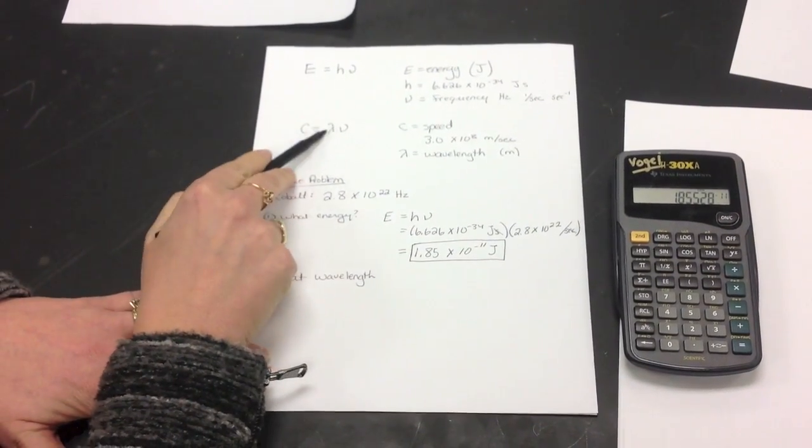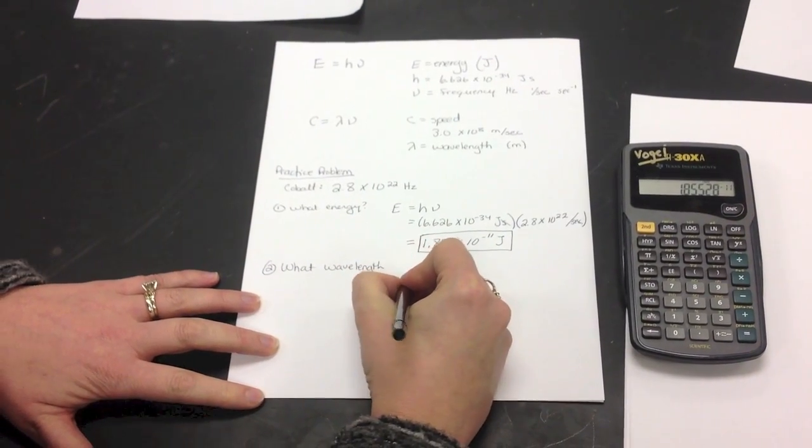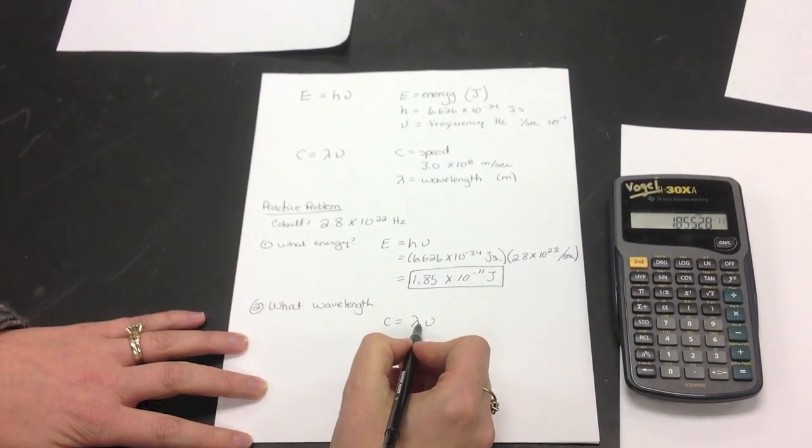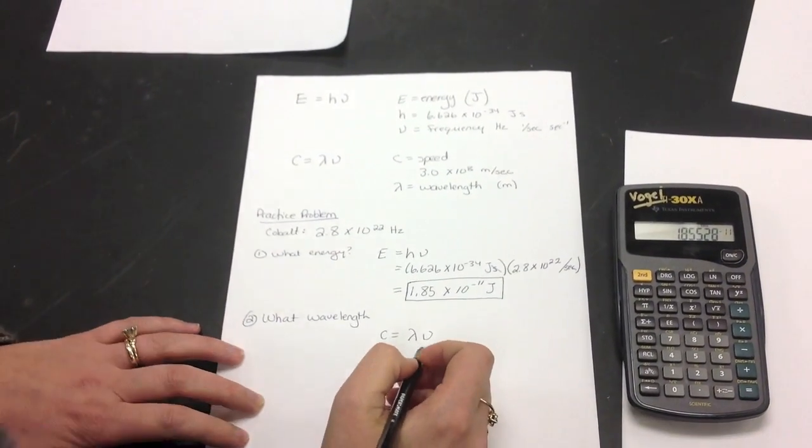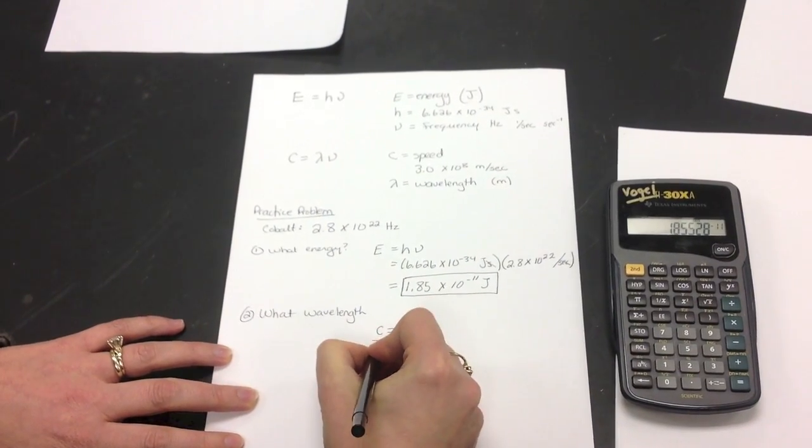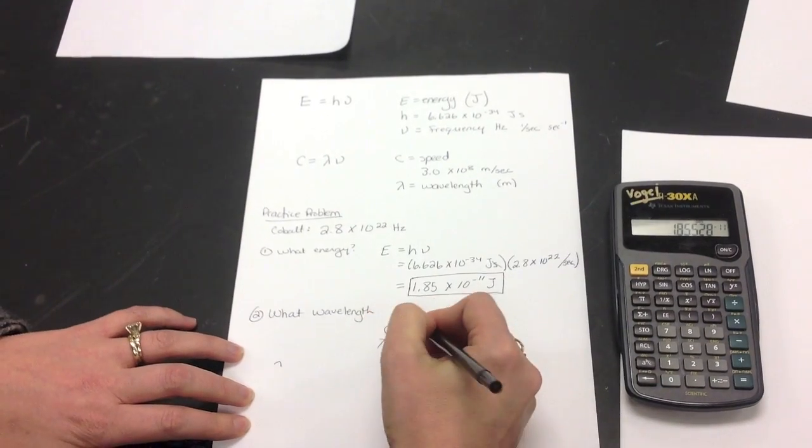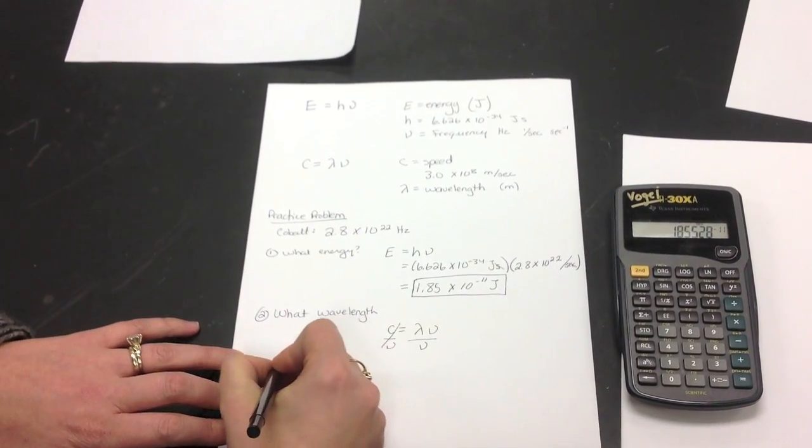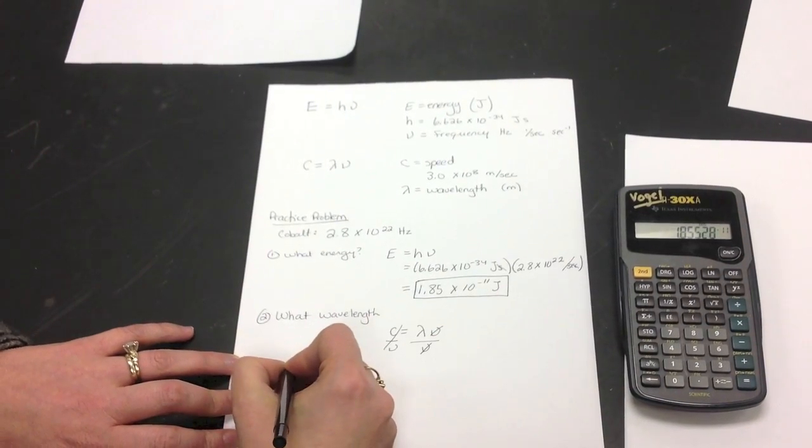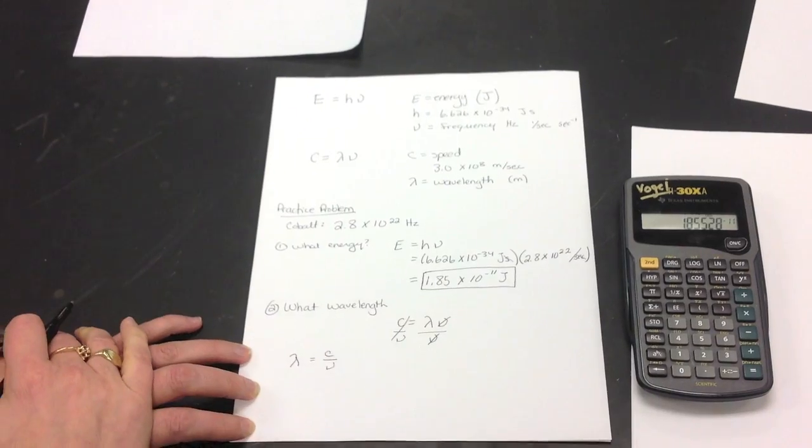And if I have that question, I'm going to use this, because this is how we relate wavelength to frequency. So, C equals lambda nu. I need to get wavelength by itself. To do that, I'm going to divide both sides by nu. C, my nu's cancel, and I end up with my wavelength equals C over nu.